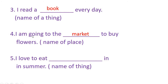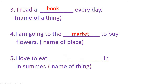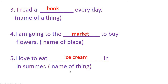I am going to the market to buy flowers — market is a name of place. Number five: 'I love to eat ___ in summer.' You have to write a name of a thing. So: I love to eat ice cream in summer. Ice cream is the name of a thing.